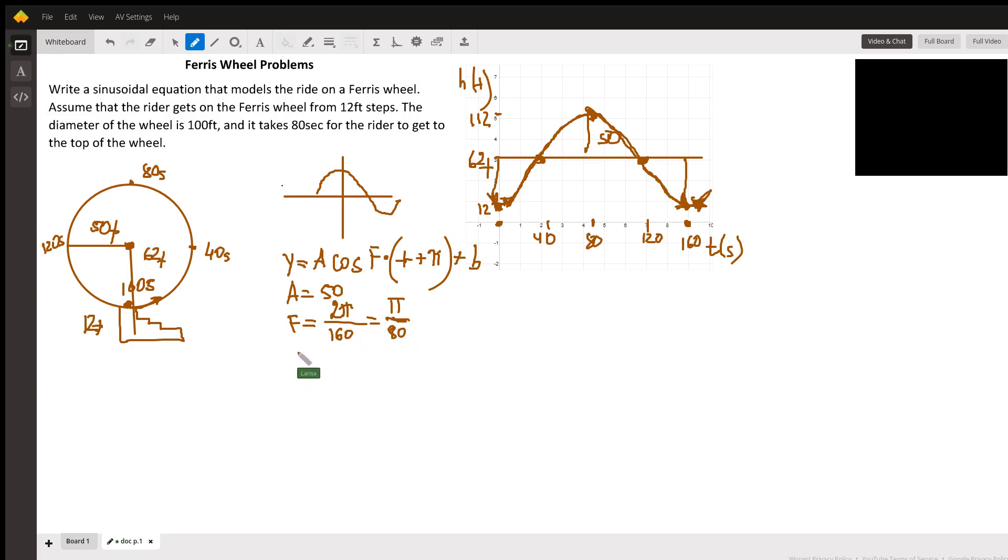What is the vertical shift? In our case, it's 62 units, 62 feet. I apologize for this mess. In our case, it's 62 feet. So shift B will be 62.